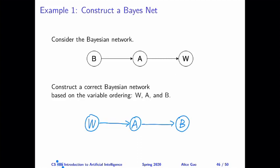In this example, we're given a Bayesian network between B and A and W. It's a causal chain going from B to A to W.